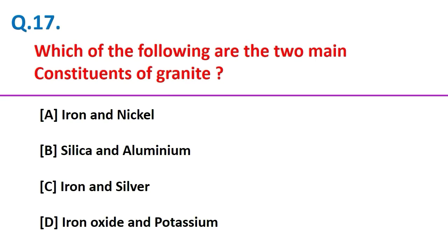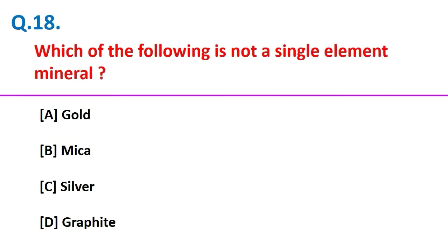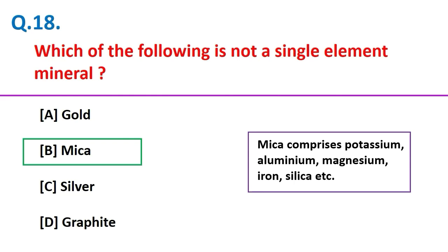Which of the following are the two main constituents of granite? The answer is silica and aluminium.